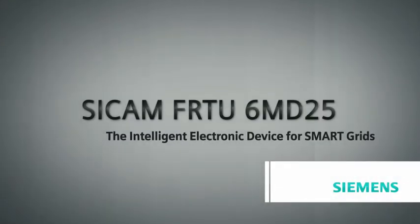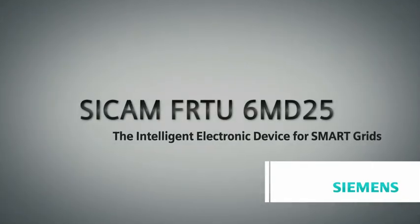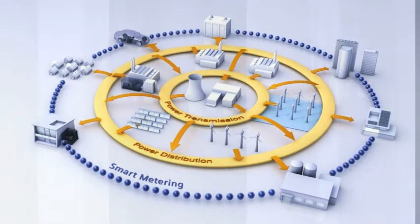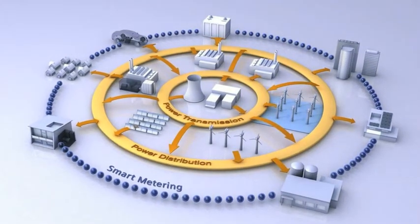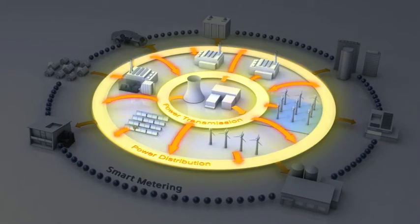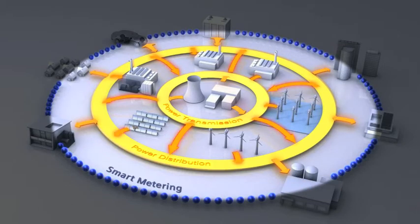SICAM FRTU 6MD25, the intelligent electronic device for smart grids. With the growing demand of electricity, power generation, transmission, and distribution networks have become complex with bi-directional power flow. This drives a stronger need for smart grids that efficiently connect all supply and demand elements to an intelligent power distribution network.